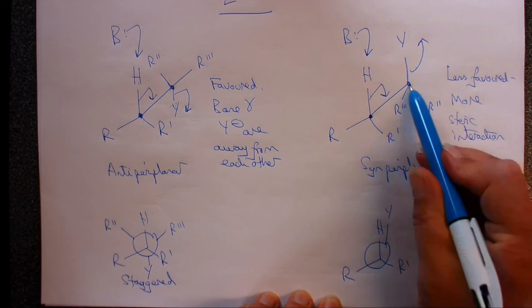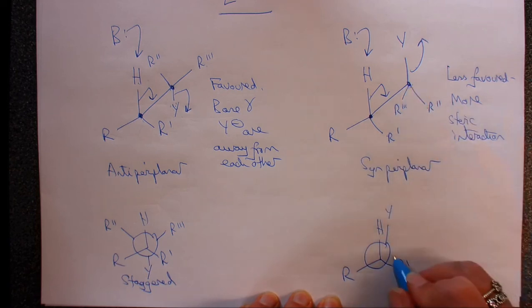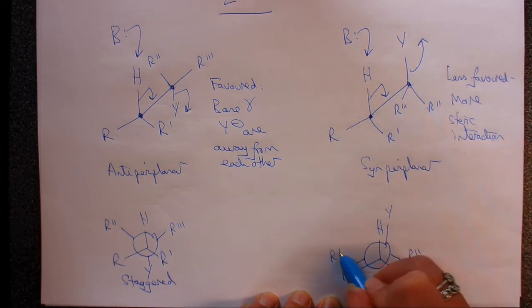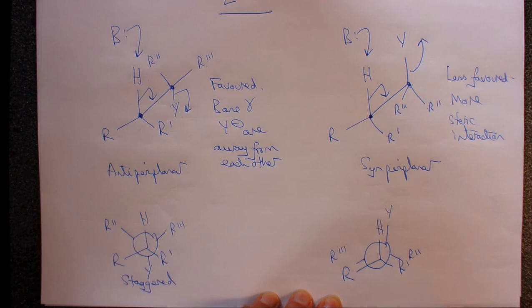Our R1 and our R2 are trying to occupy the same area of space. When we look along this, our R and our R3 are trying to occupy the same area of space. And we call this eclipsed because they are eclipsing. They're directly in front of each other.